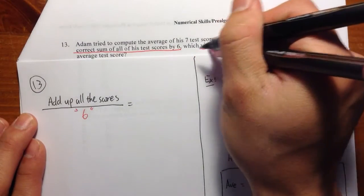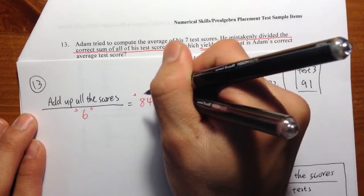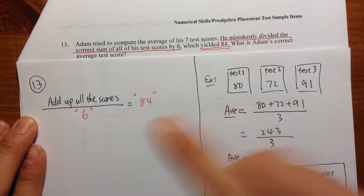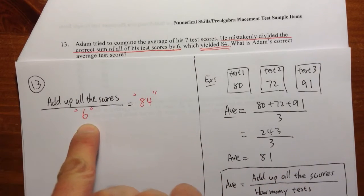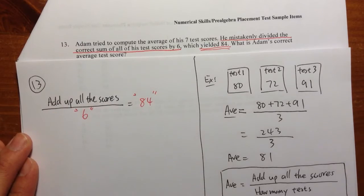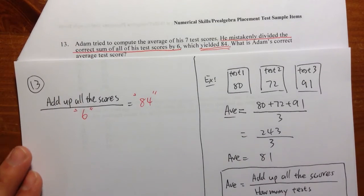Anyways, he added all the scores, divided by 6, and he got 84. Let me put this again in quotation marks. So this is the wrong average of Adam because he divided by a wrong number. But however, he did add up all the scores correctly. He says so right here, correct sum.